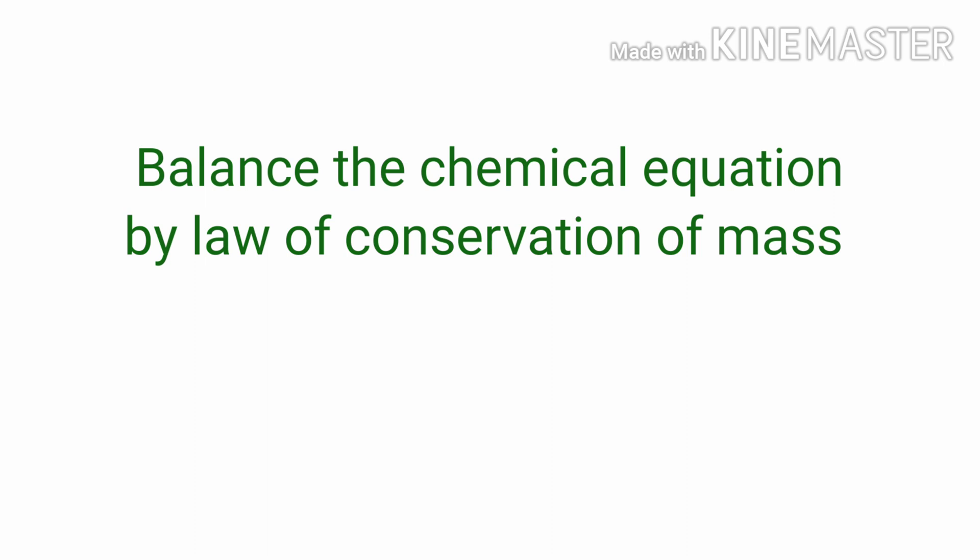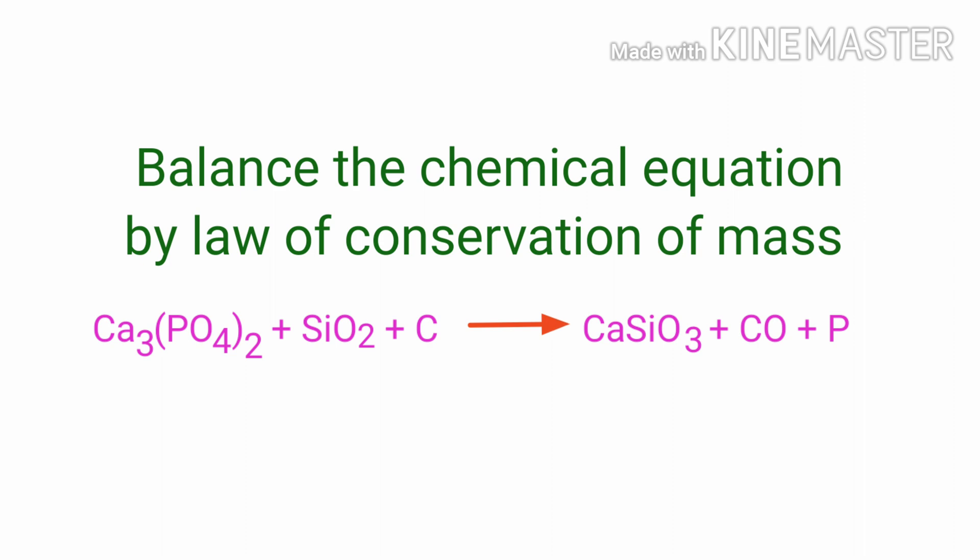Balancing a chemical equation by the law of conservation of mass. The equation is: calcium phosphate plus silicon dioxide plus carbon gives calcium metasilicate plus carbon monoxide plus phosphorus.